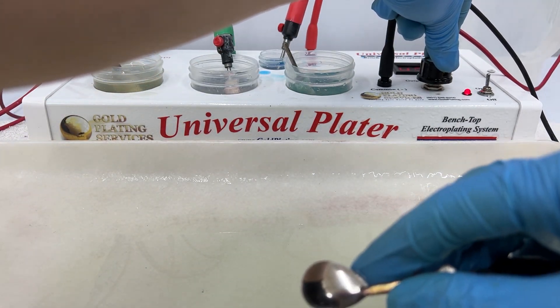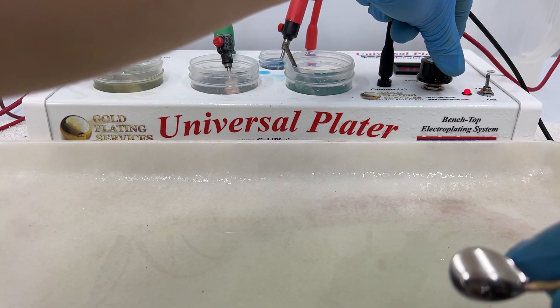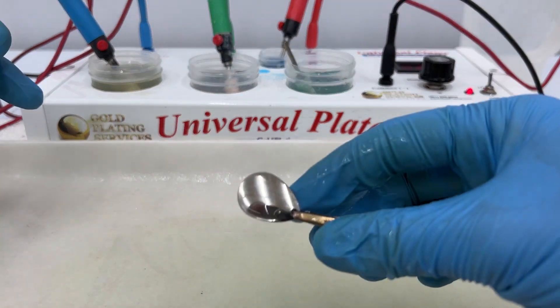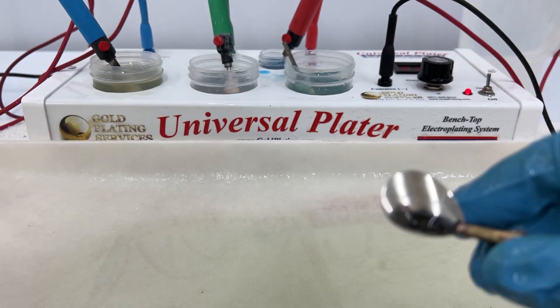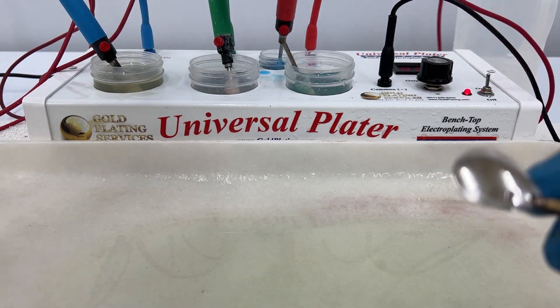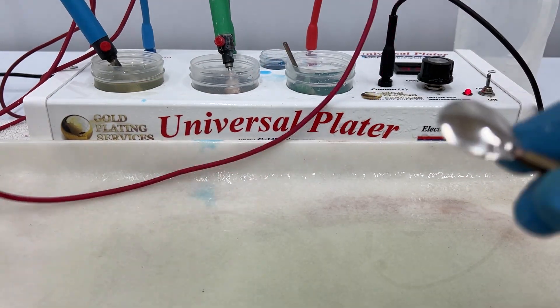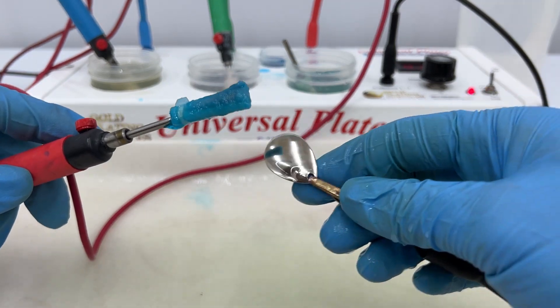I'm going to turn my voltage down to 3.2. Depending on different metals, parts, surface size and all that, it's going to be different for everything. For this little part I'm just doing 3.2.